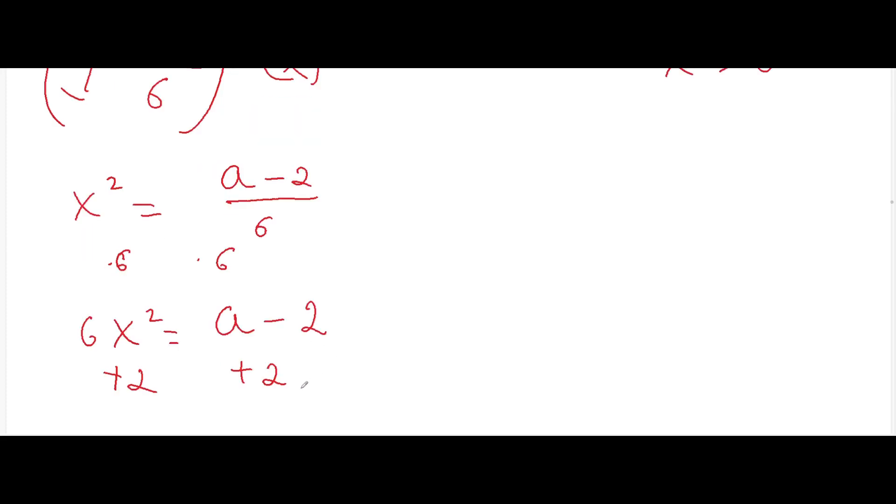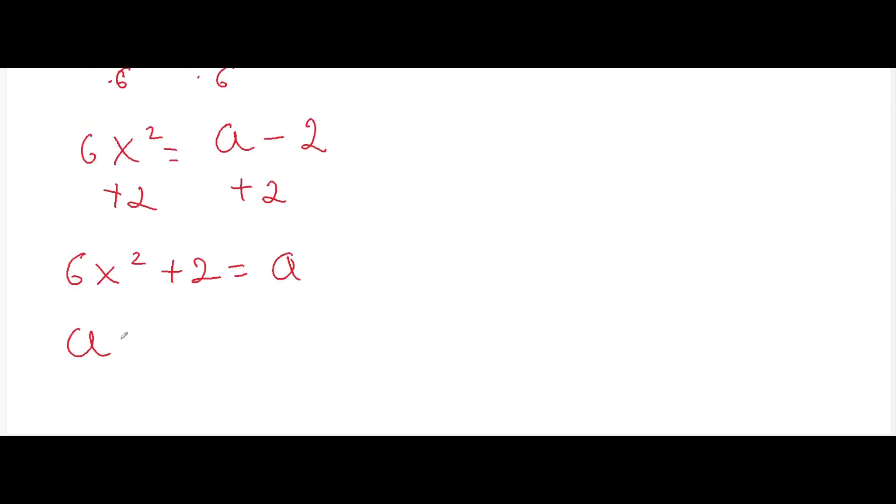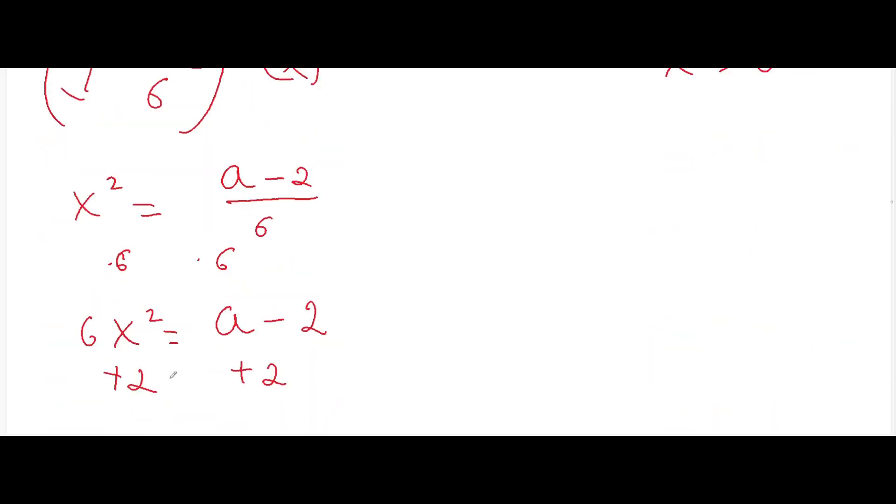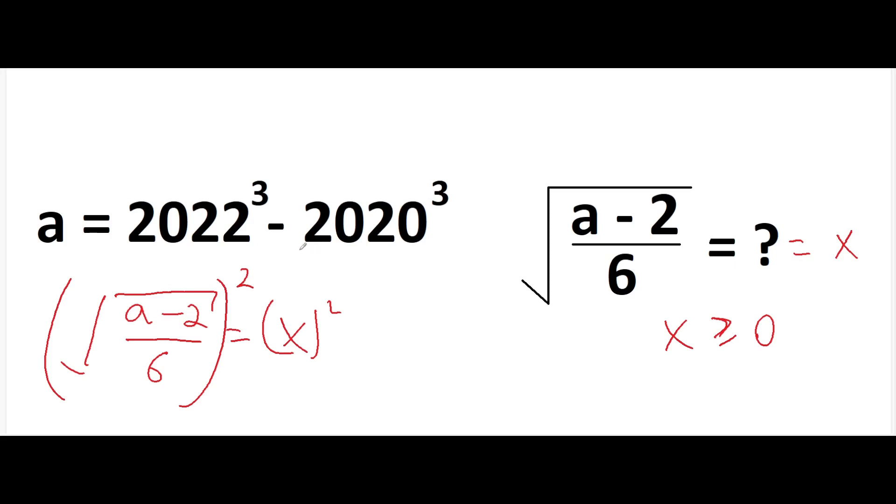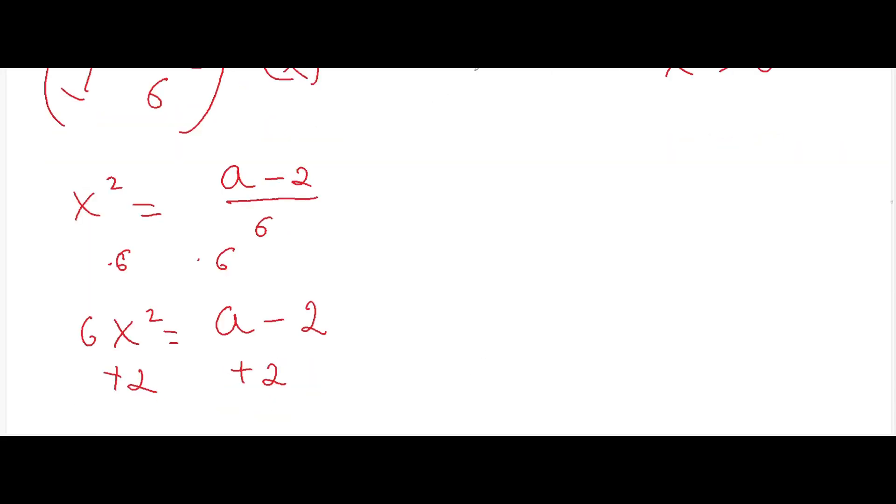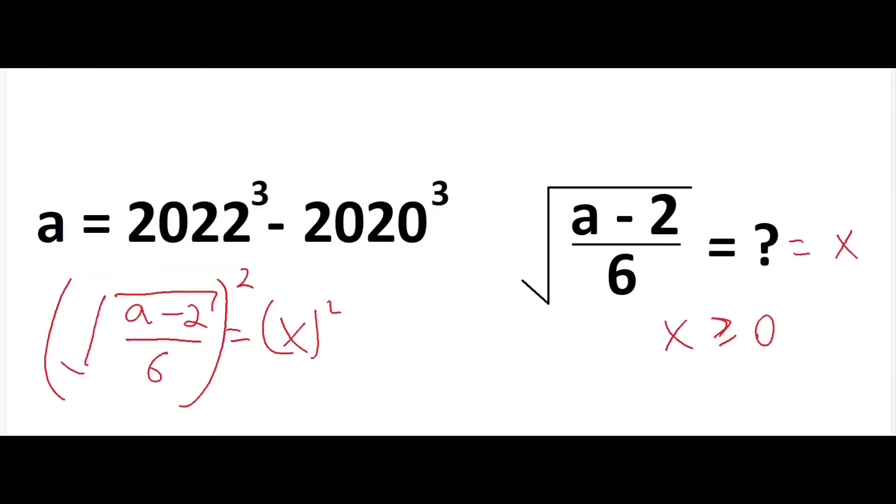Now we found a. So a equals to this expression. And now we can equal this expression 6x squared plus 2 to this value. Let me write it down here. Let me now copy it to be convenient. Here, the first expression and the other expression is equal to 6x squared plus 2.